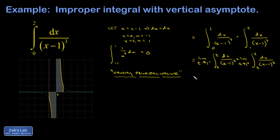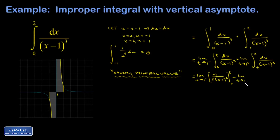I compute the antiderivative: the integrand is (x minus 1) to the negative 3, so the antiderivative is (x minus 1) to the negative 2 divided by negative 2, which simplifies to negative 1 over 2 times (x minus 1) squared. I evaluate this from 0 to t for the first limit, and from t to 2 for the second limit.